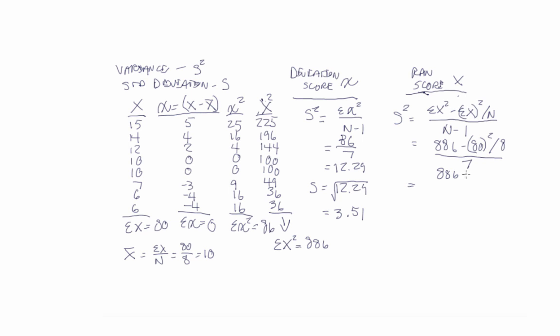886 minus 80 squared is going to be 6400 divided by 8, which equals 800, over 7, which equals 86 over 7, which equals 12.29, which is the exact same thing that we got here. It's math and magic. You get the same answer whether you use the deviation score formula or the raw score formula.